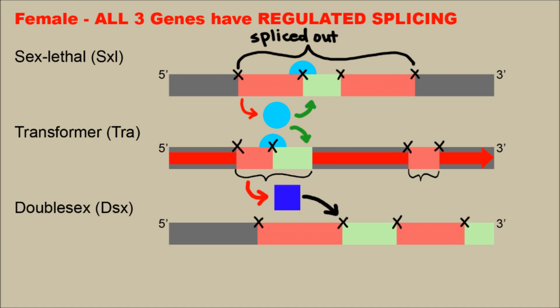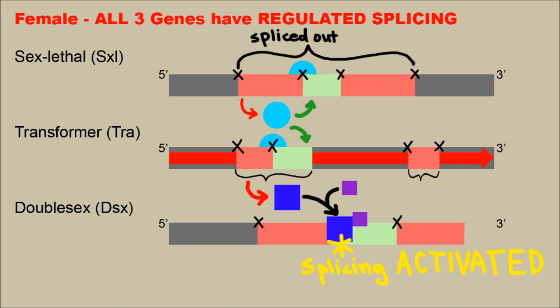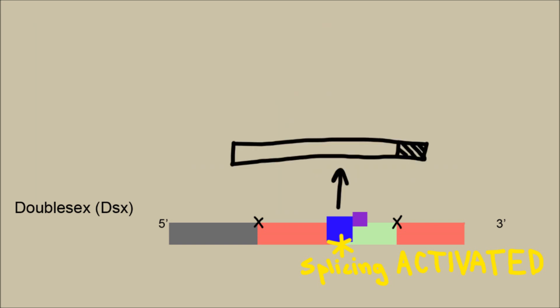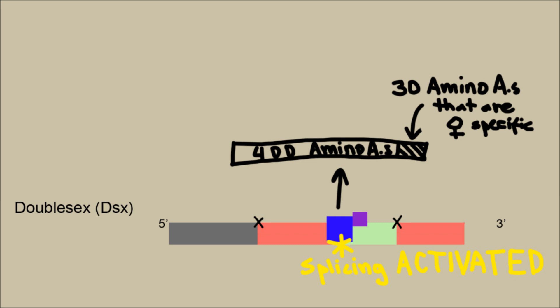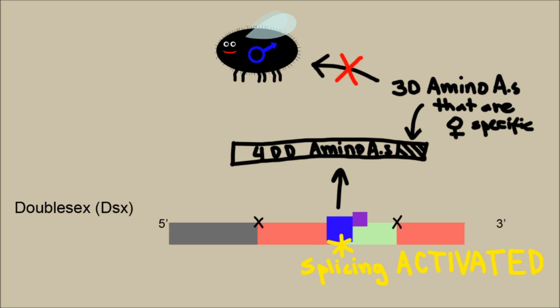This transformer protein acts on the double sex mRNA in concert with a second protein called transformer 2. Transformer 2 is a constitutively produced protein, meaning that it is always being translated and is always around. Together, these two transformer proteins activate splicing. Notice that there is a little green region at the 3' end of the double sex mRNA — this portion is present in males but is absent in female mRNA. A protein gets produced from the double sex mRNA, and again there is a 400 amino acid portion from the N-terminus identical in male and female fruit flies. The C-terminus, however, has a 30 amino acid portion particular to the female Drosophila. This portion represses male differentiation genes, and so a female is born.